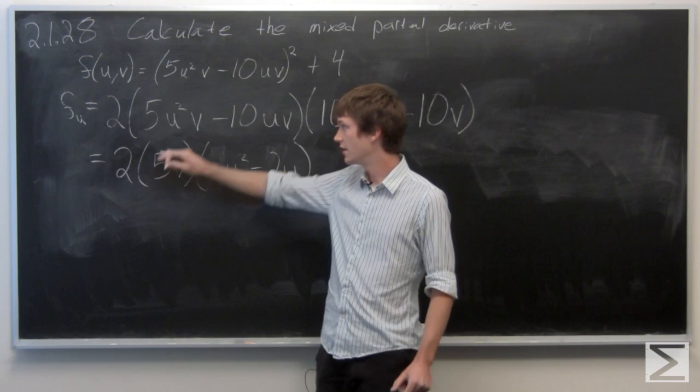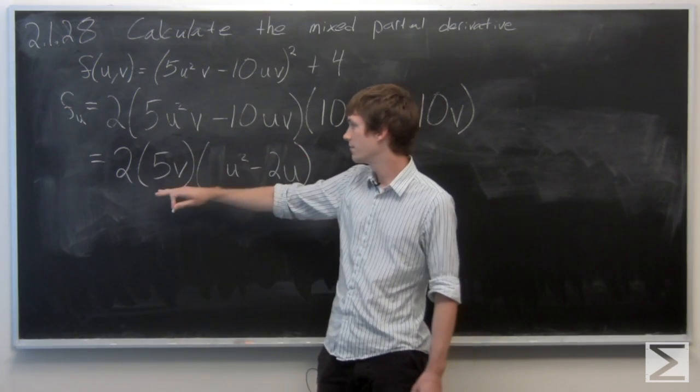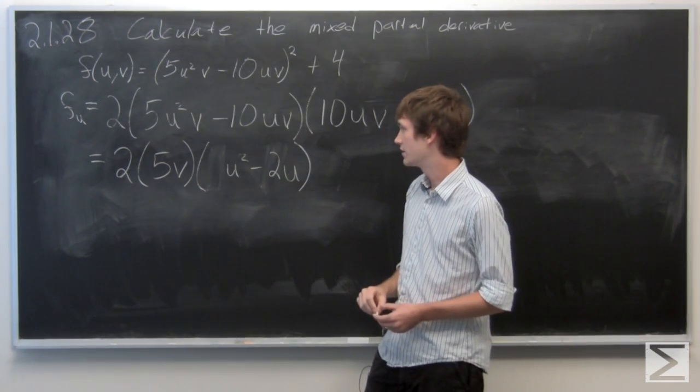So if we pull a 5v out of this first term, we get 5v times u². Let's combine these two v² minus 2u.